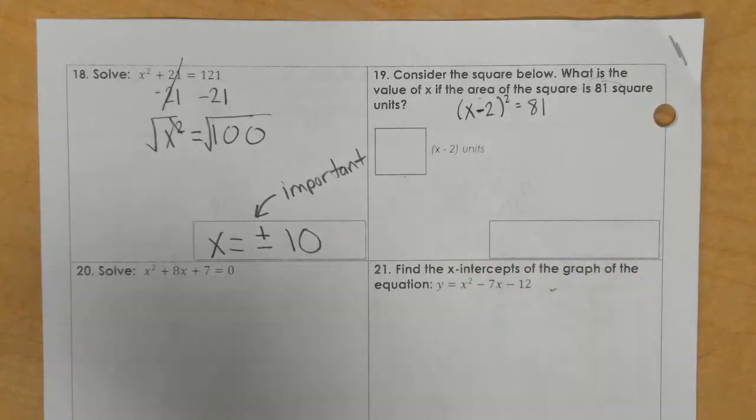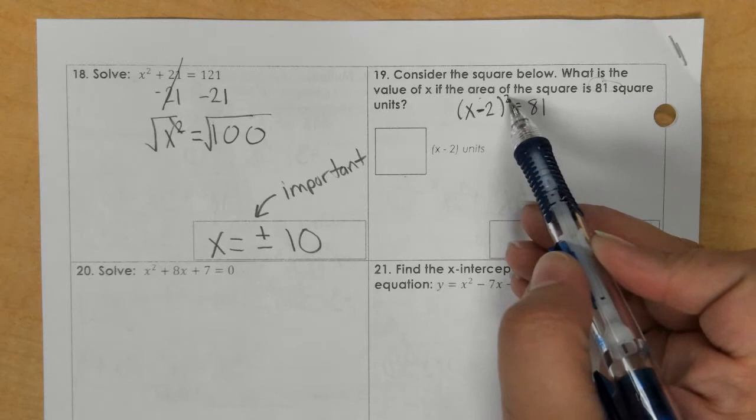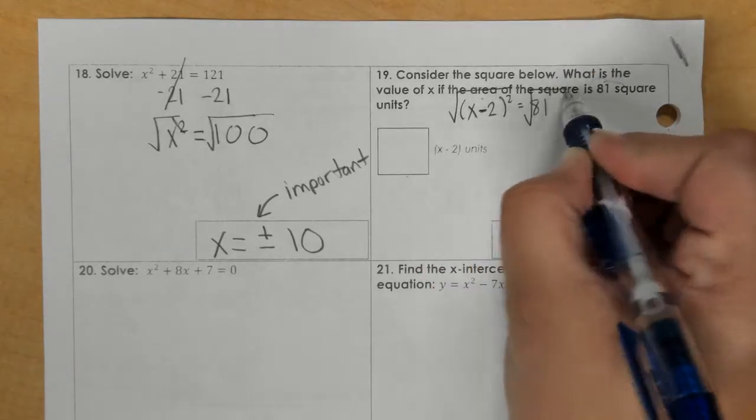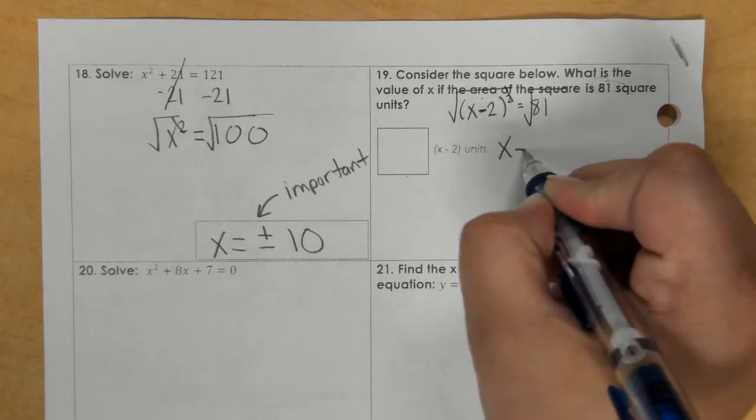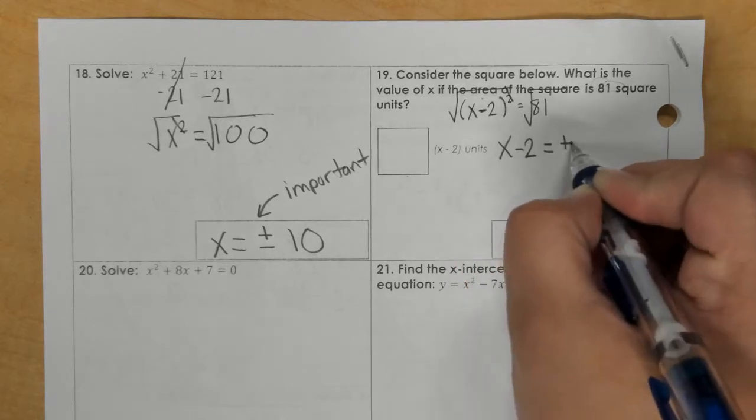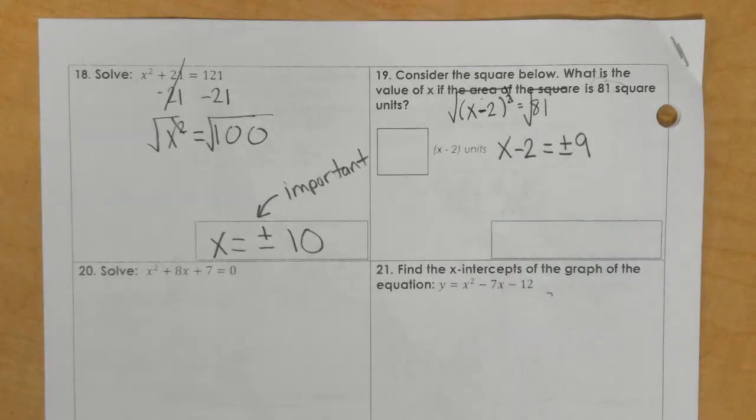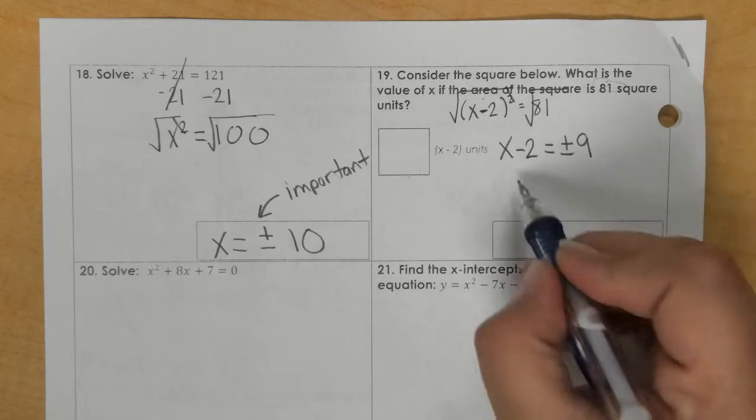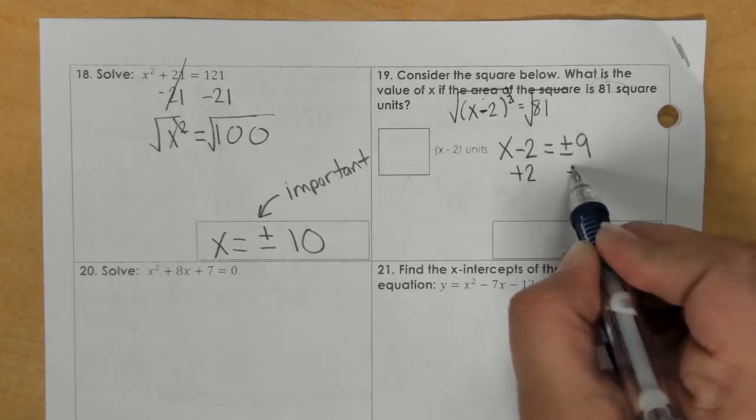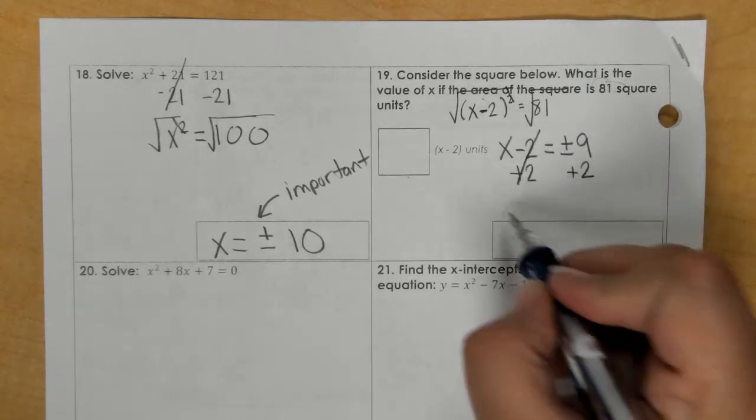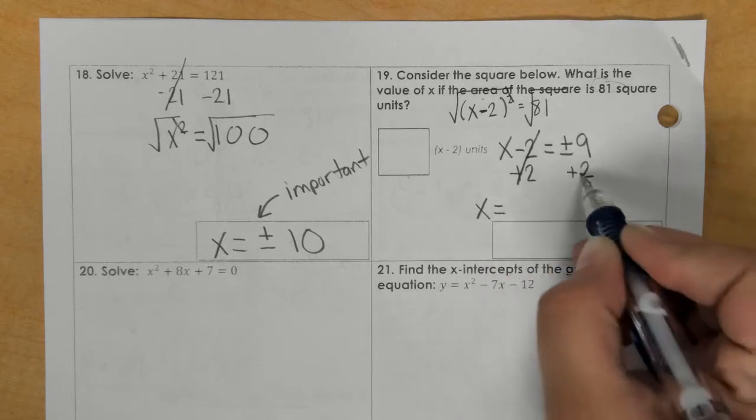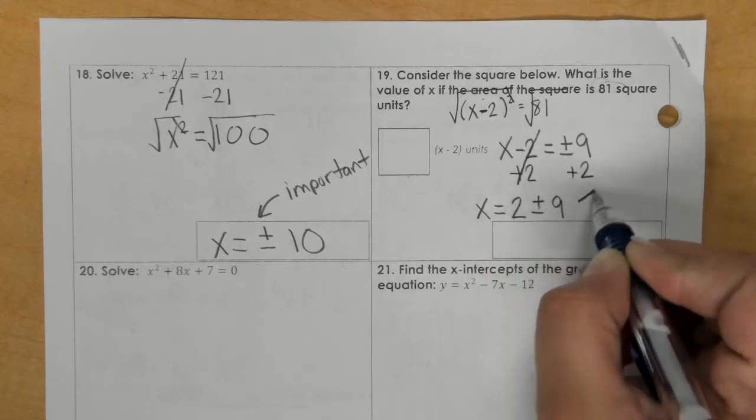So now to solve this, I would square root both sides to get rid of my 2. And I have x minus 2 equals plus or minus 9. Then I would add 2 to both sides, and we get 2 plus or minus 9.